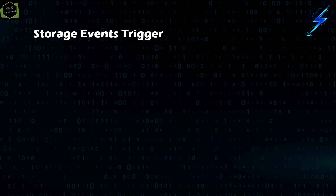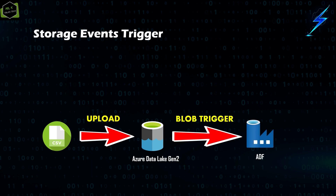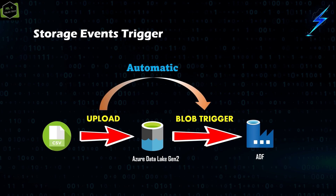For example, if you have a copy data pipeline that copies a CSV file from Azure Data Lake Storage Gen 2, you can create a storage events trigger on that pipeline. Whenever a CSV file is uploaded into the Azure Data Lake Storage Gen 2, it will instantly trigger the copy data pipeline to copy the newly uploaded file from source to destination automatically.